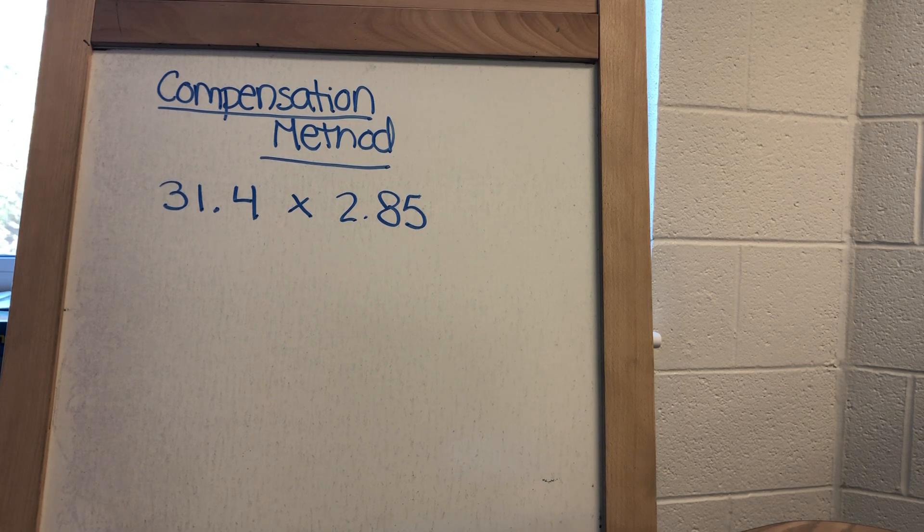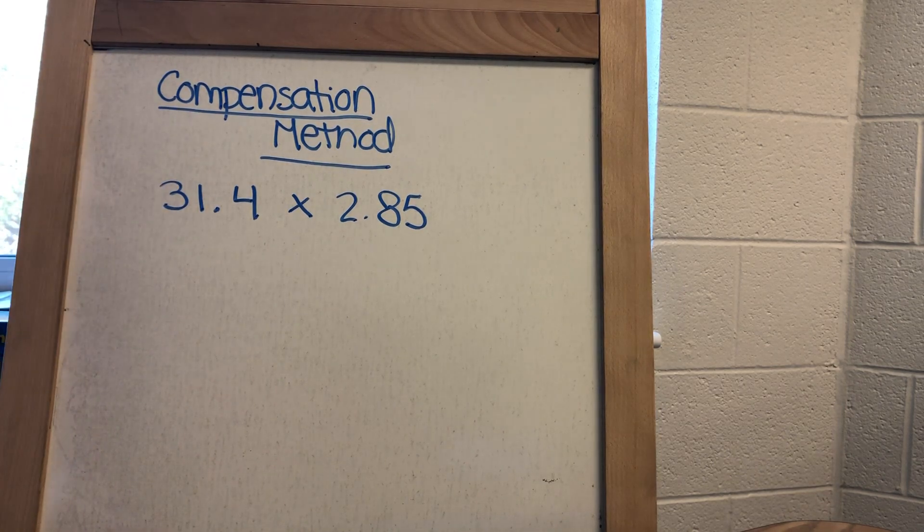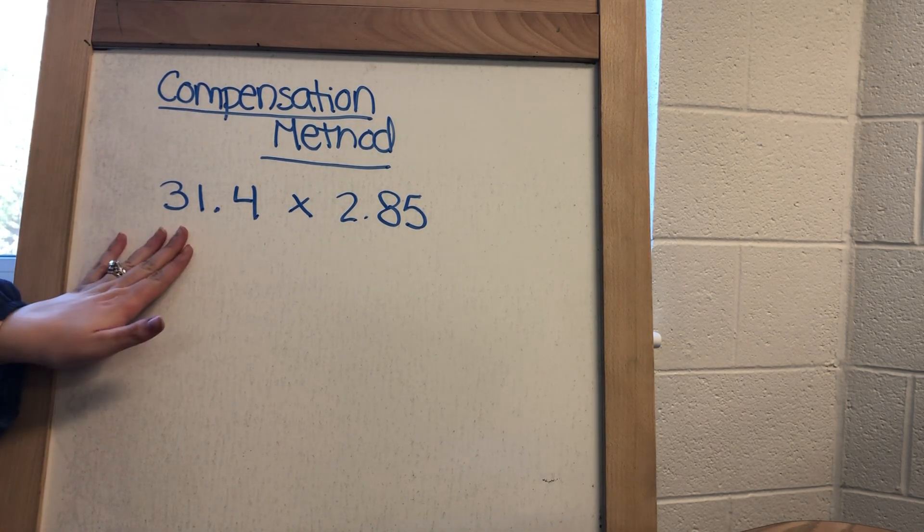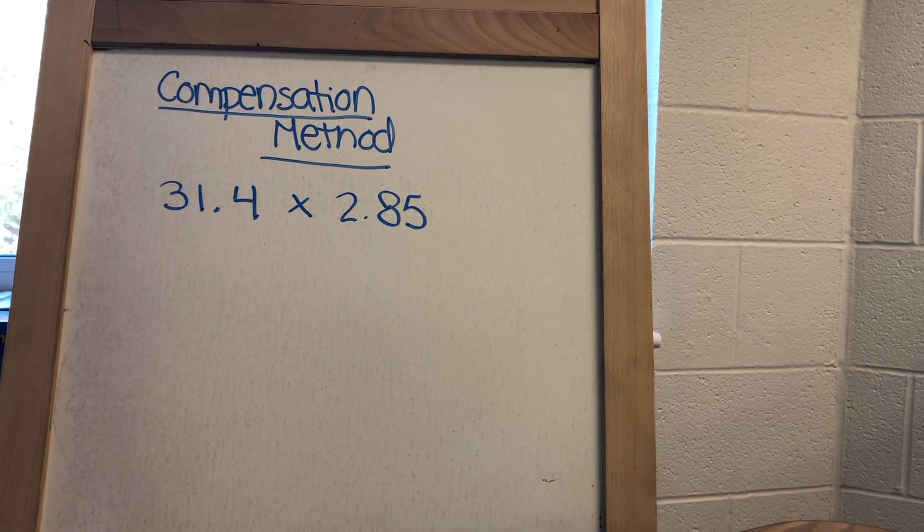Another model to multiply two numbers that have decimals in them is called the compensation method. So with this method, the idea behind it is that we create both of these decimal numbers and we make them into whole numbers.